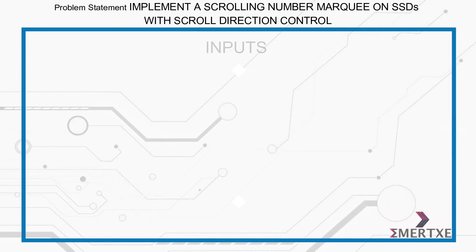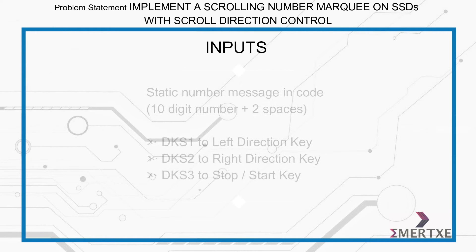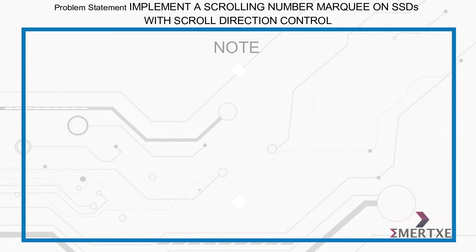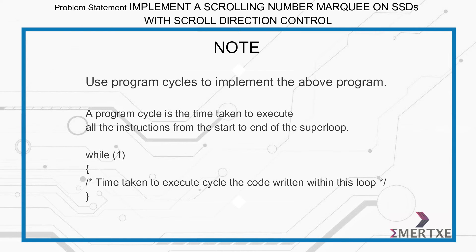The inputs required for this assignment are a static number message in code — that is, a 10-digit number plus two spaces — dks1 to left direction key, dks2 to right direction key, and dks3 to stop or start key. Please note to use program cycle to implement the above program.